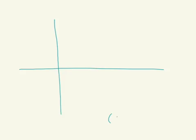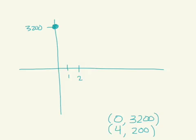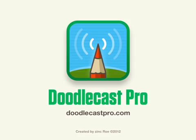To come up with our graph, we have our two points. At the very beginning, the computer is worth $3,200, so we plot that point. Then four years later, our computer is worth $200. So there's one, there's two, there's three, there's four. Four years later it's worth $200, so we plot that point and then we connect those two points with our line that represents our amount of linear depreciation.